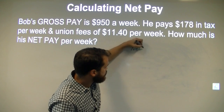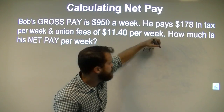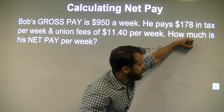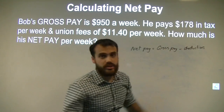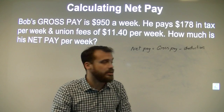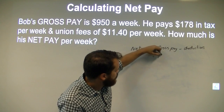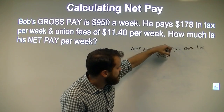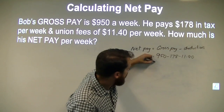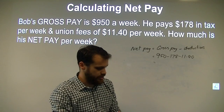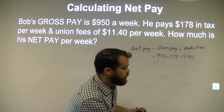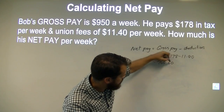So his net pay is equal to his gross pay minus deductions. It's a pretty straightforward concept. His gross pay is $950 a week. The tax that goes to the government is $178 per week. The union fees are $11.40 a week. And whatever's left over is going to end up being his net pay. So $950 minus $178 minus $11.40. We get $760.60.